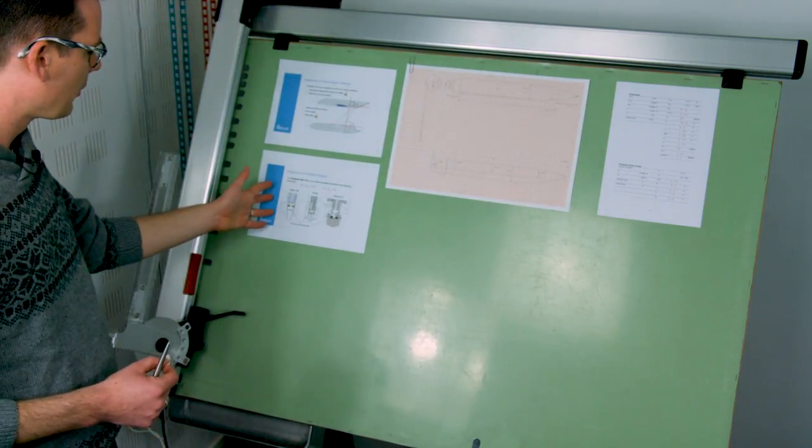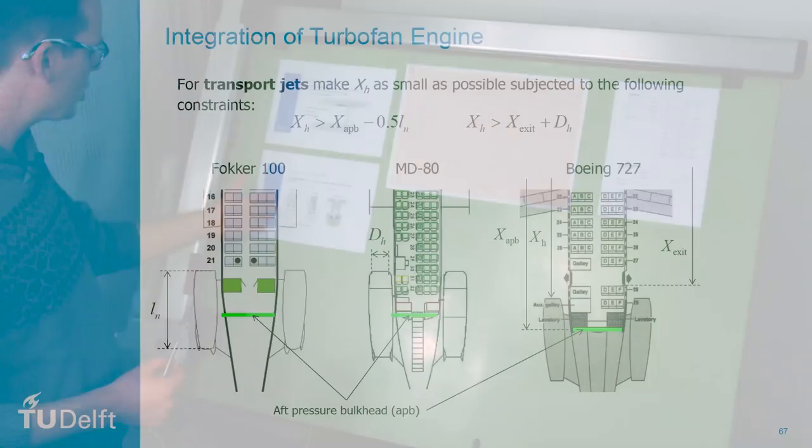So for example here you see for transport jets where these fuselage mounted engines are integrated in the top view and based on that data I deduced basically two rules.